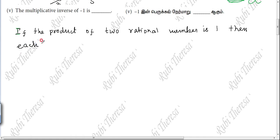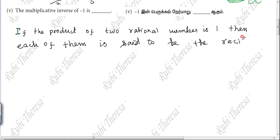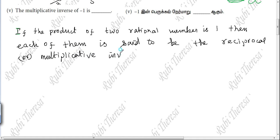Each of them is said to be the reciprocal, the multiplicative inverse of the other. This is the multiplicative inverse — multiplicative inverse of the other.